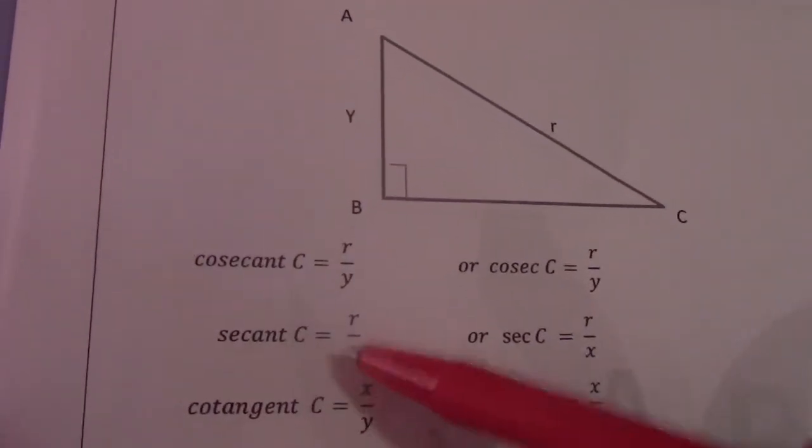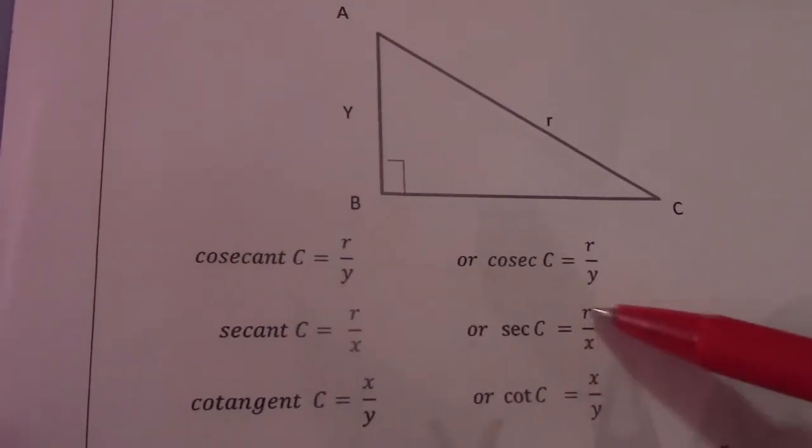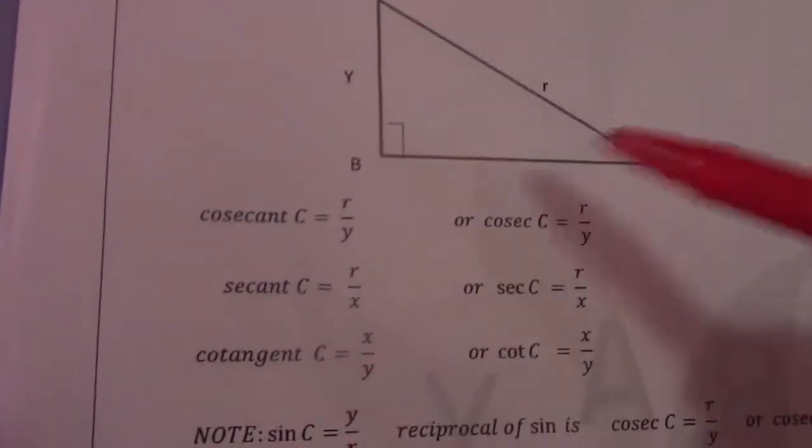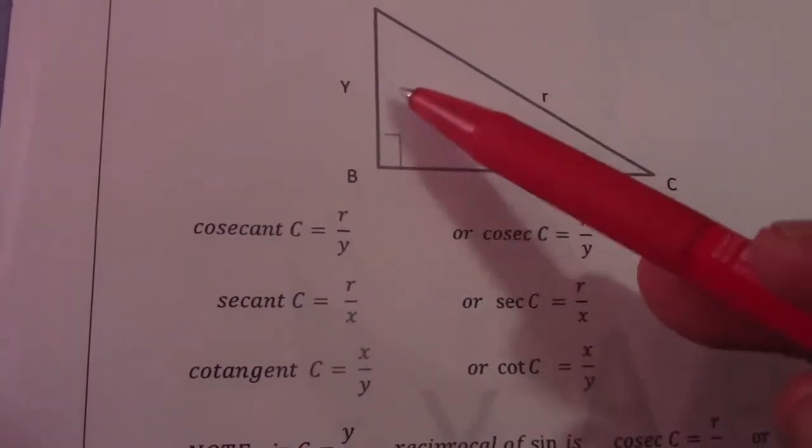If I go to sec c, sec c equals r over x, or sec c equals r over x. Cotangent c, or cot c, equals x over y.